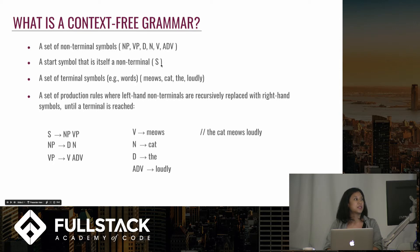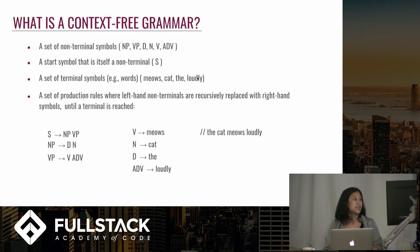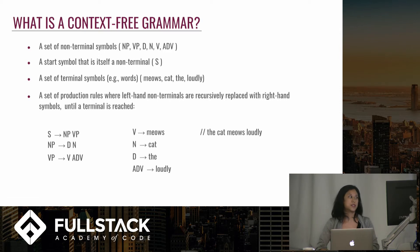The second element is a start symbol, which is itself a non-terminal, and then a set of terminal symbols, which are words like 'the', 'cat', 'meows', 'loudly'. The idea is that you have a set of production rules where the left-hand non-terminals are recursively replaced by the right-hand symbols until a terminal is reached.